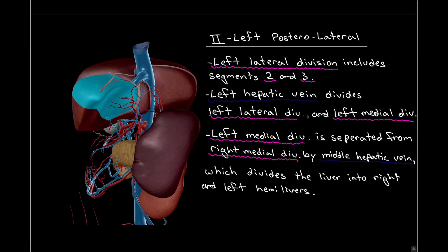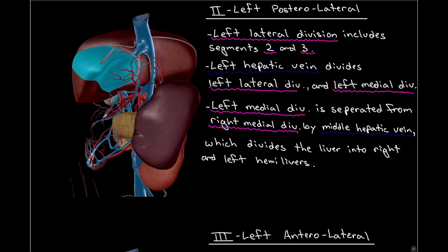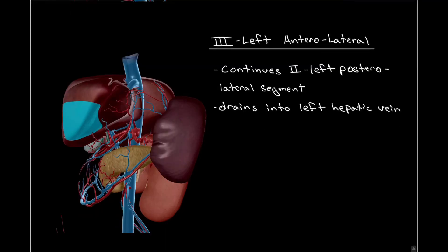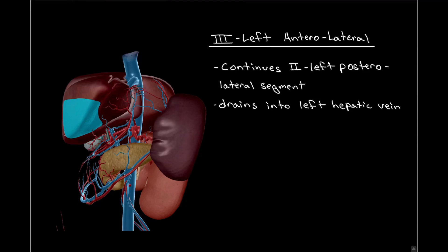I've also highlighted here the middle hepatic vein, which divides the liver into the right and left hemilivers, which we will see later on. Segment number three is also part of the left lateral division, and together with segment number two, it drains its blood into the left hepatic vein.